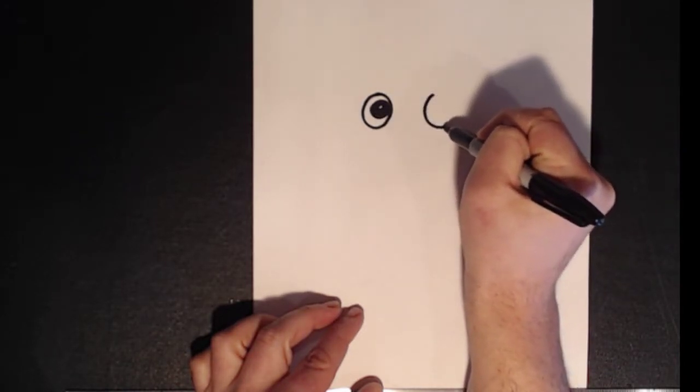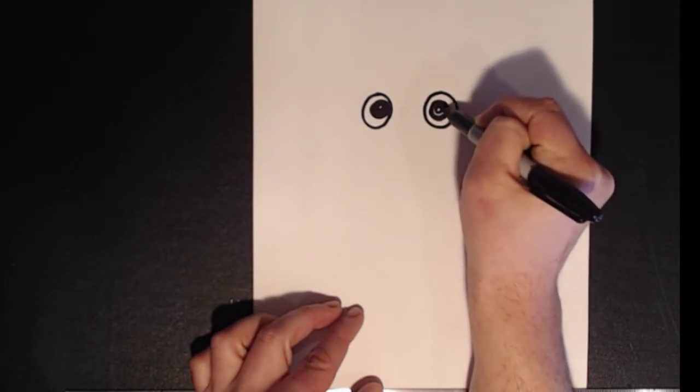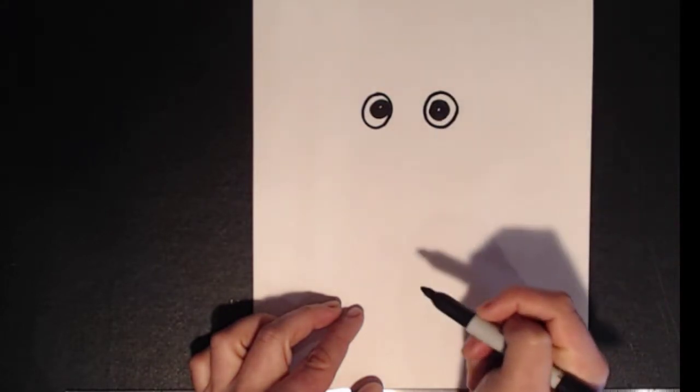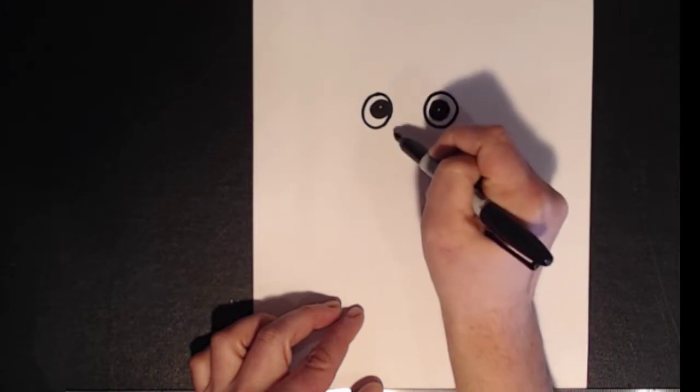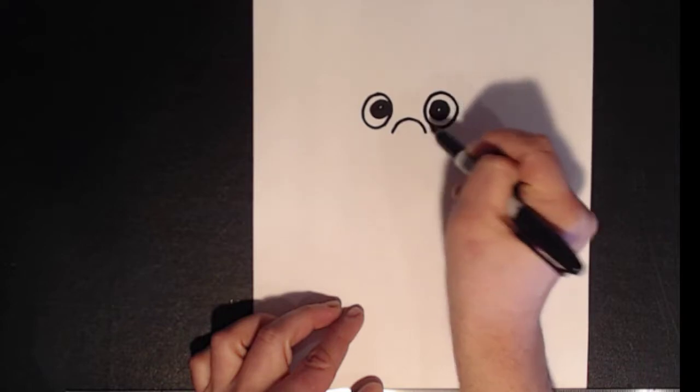Eyeball one. Eyeball two. Then he has what is almost like a half circle, but a little bit of a roundness at the bottom for the nose.